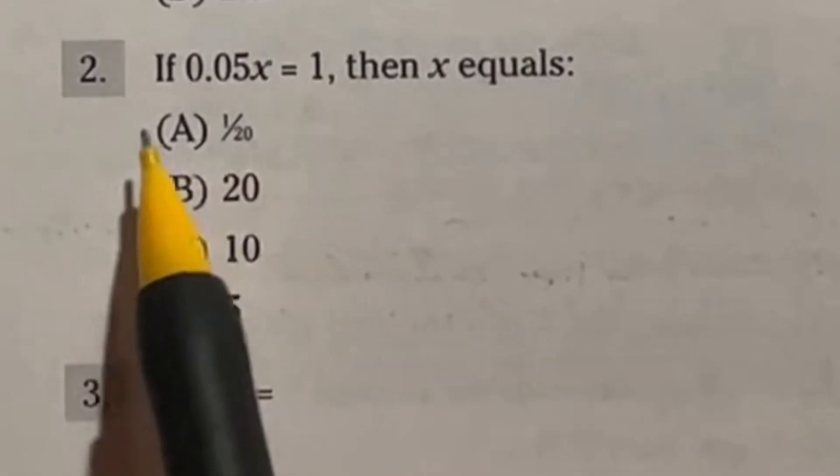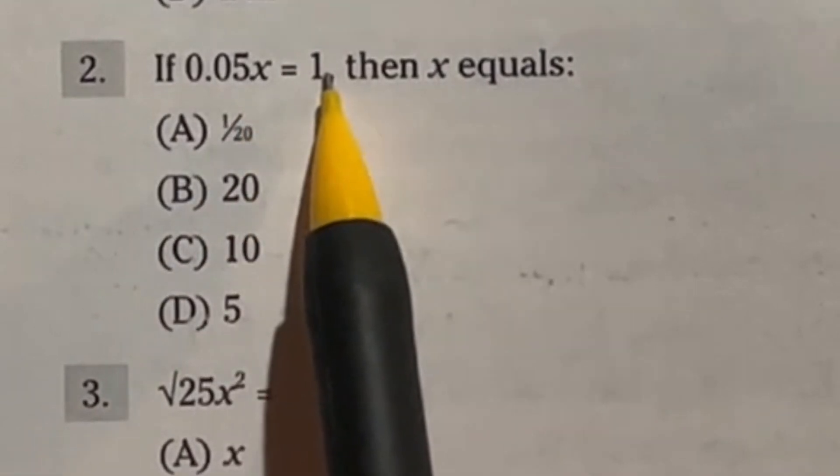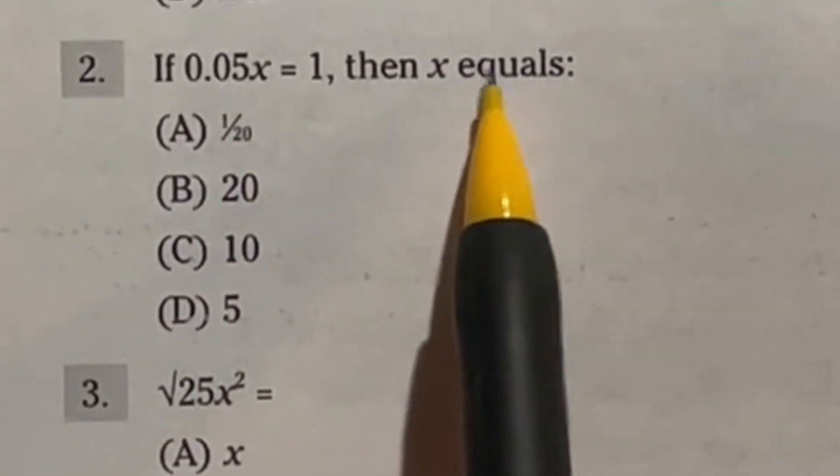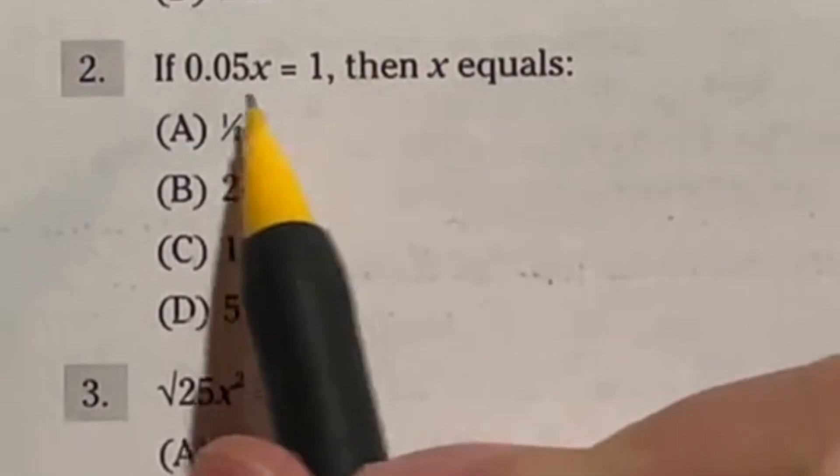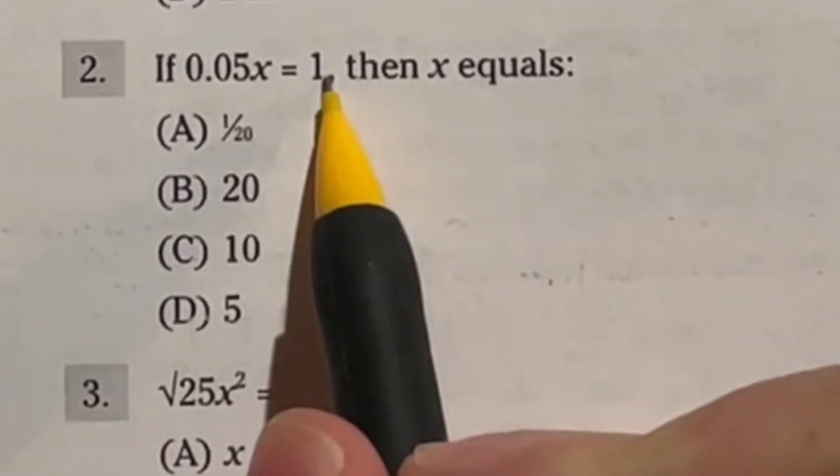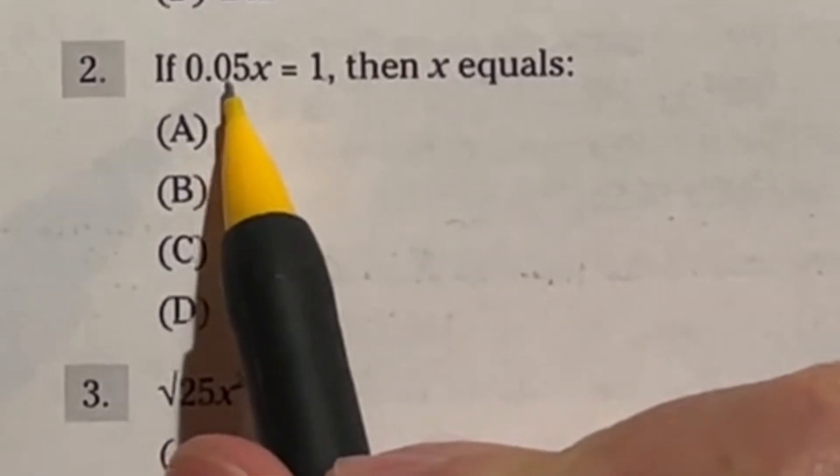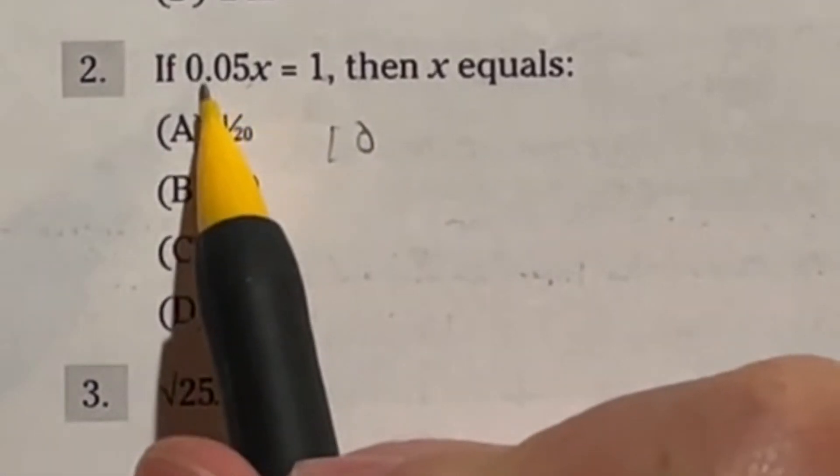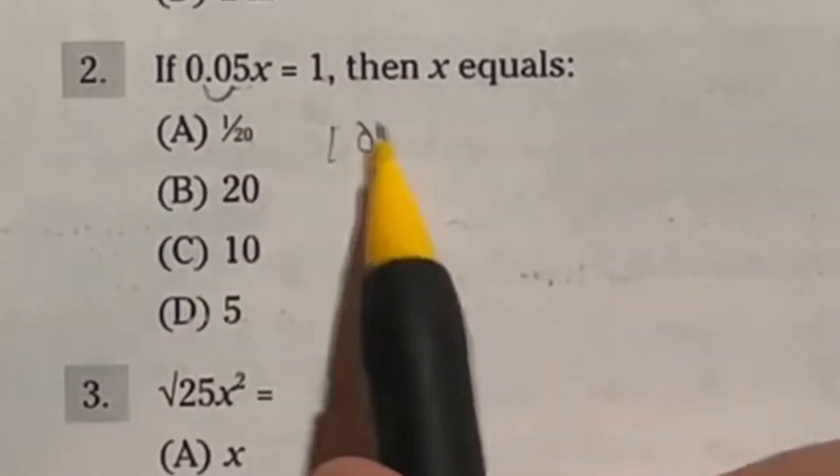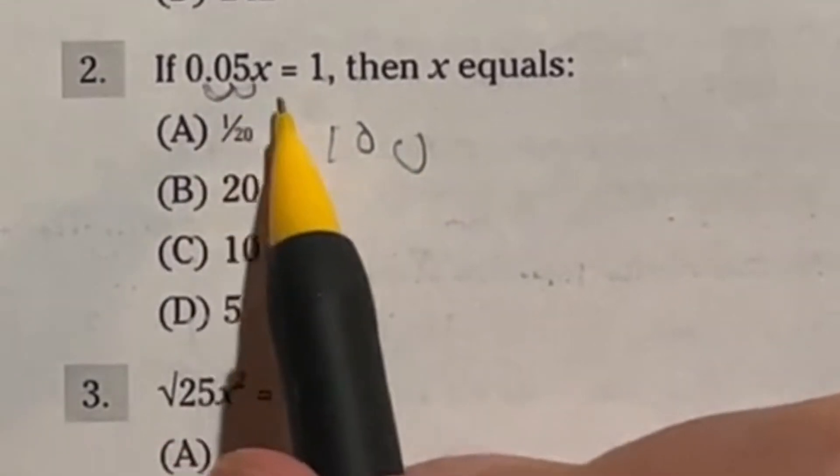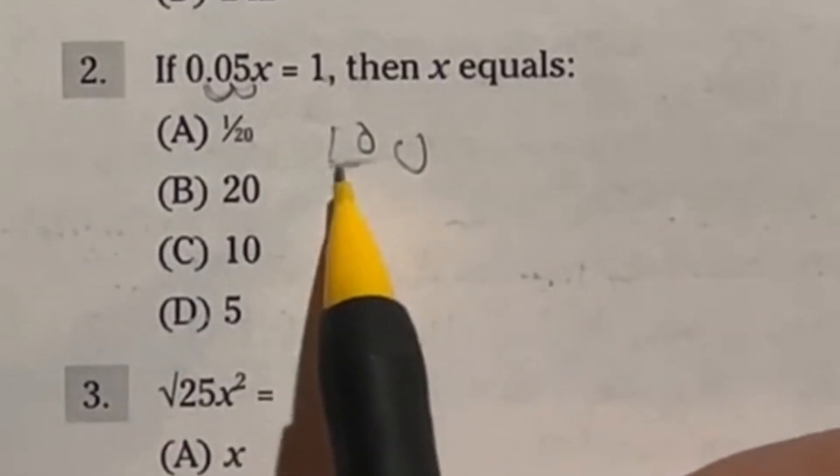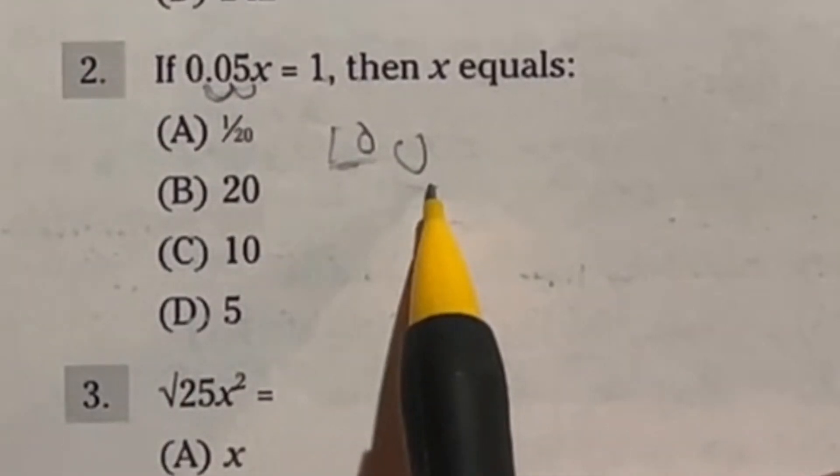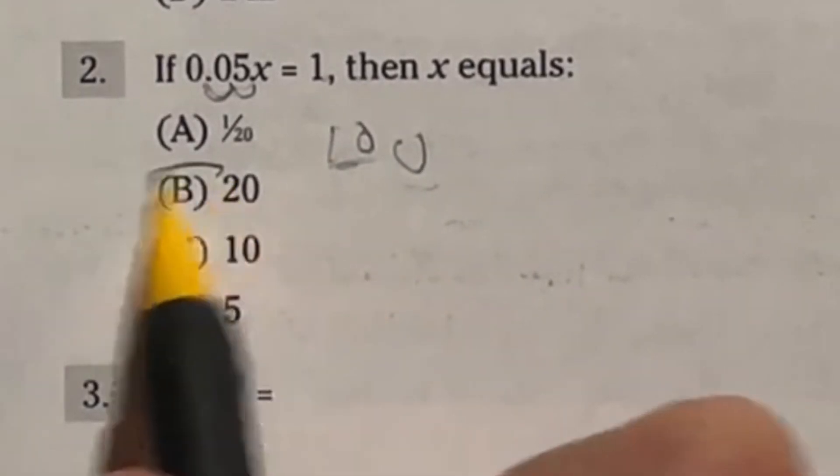Bonus question. It says if 0.05x is equal to 1, then what does x equal? Well, 0.05 times what is going to give me 1? Well, I can tell you right now that if I multiply it by 10, that moves the decimal place over 1. So if I multiply by 100, it'll move it over twice. So that means that 10 is not going to be enough. 100 is going to be too much, somewhere in between. The only possible answer then is B.